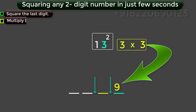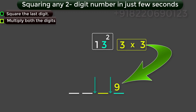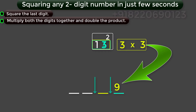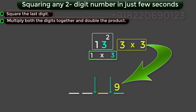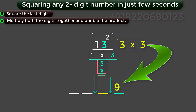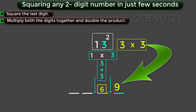Step 2 — multiply both the digits together and double the product. Multiply both digits 1 and 3 together, you will get 3. Next, double this digit 3, you will get 6. This 6 becomes the middle part of the answer.